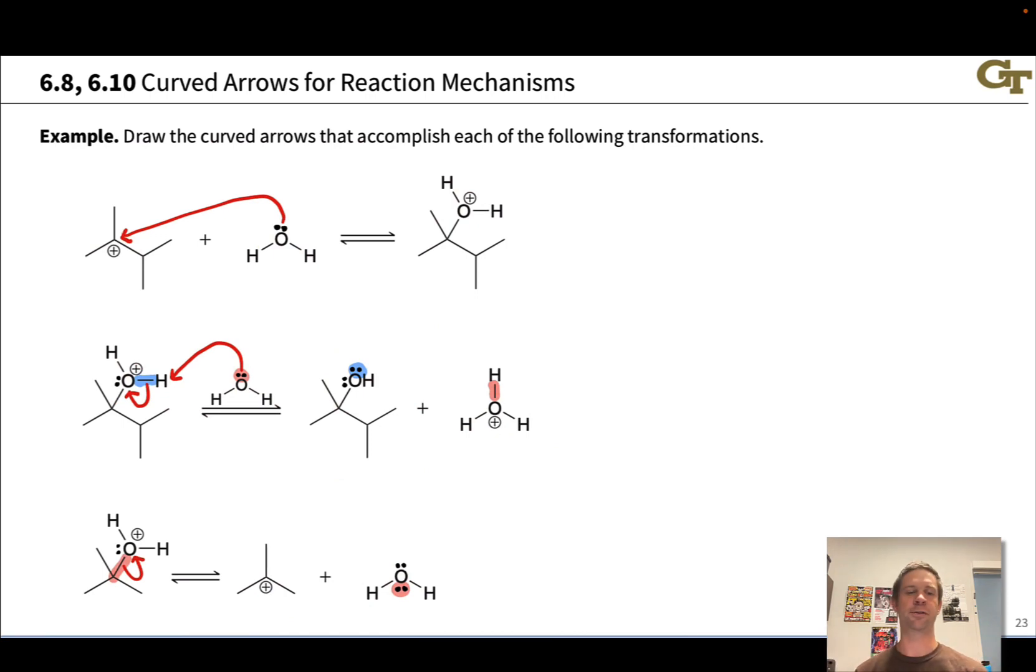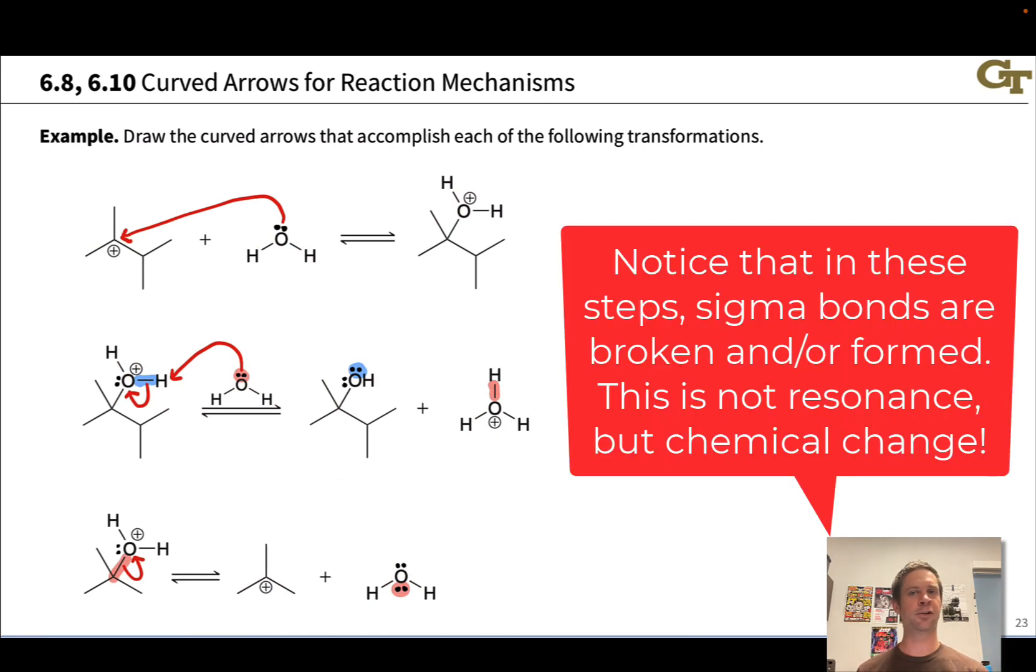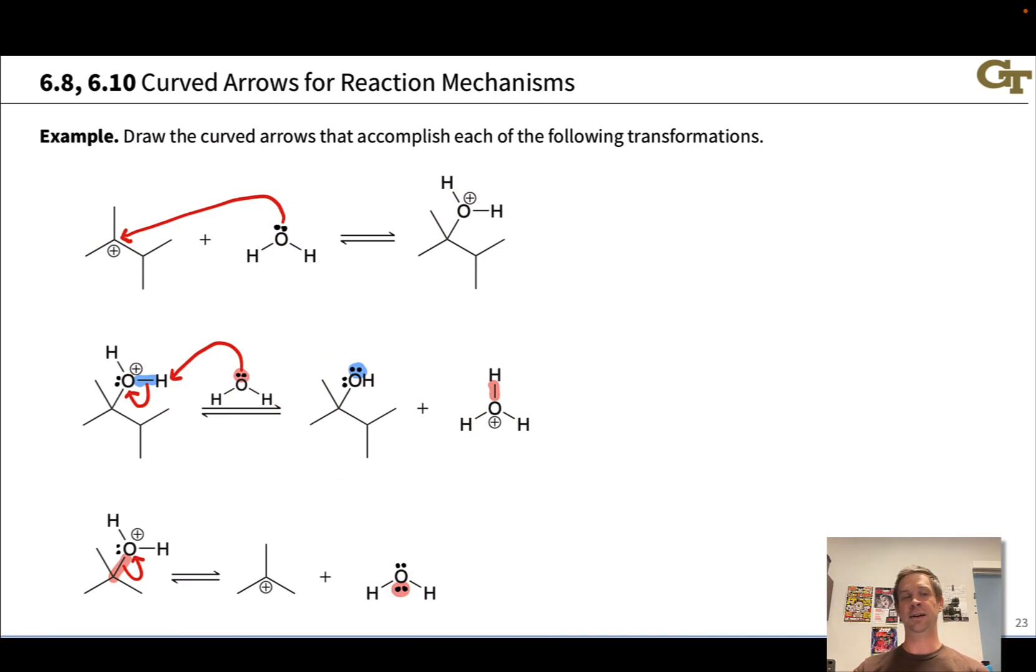So this is a skill you'll want to get very, very good at, being able to look at reactants and look at products and see the electronic movements that converted the reactants into the products. Particularly when we know this occurs in a single elementary step, we should be able to draw curved arrows for electron movements in the step by applying these bookkeeping ideas that we looked at in this example problem.